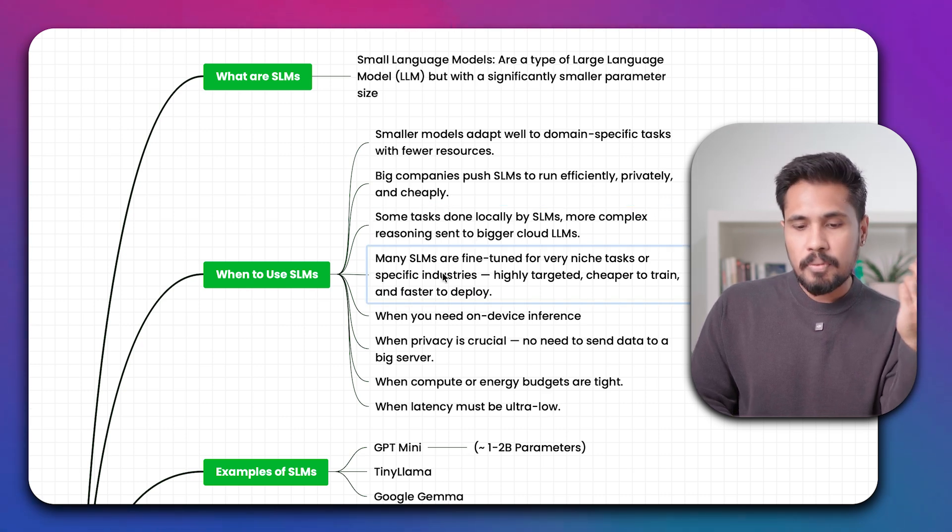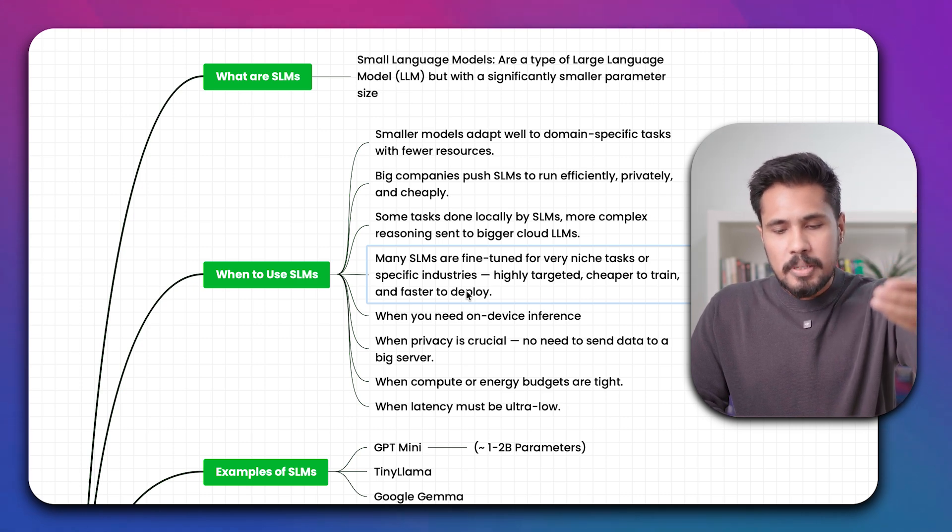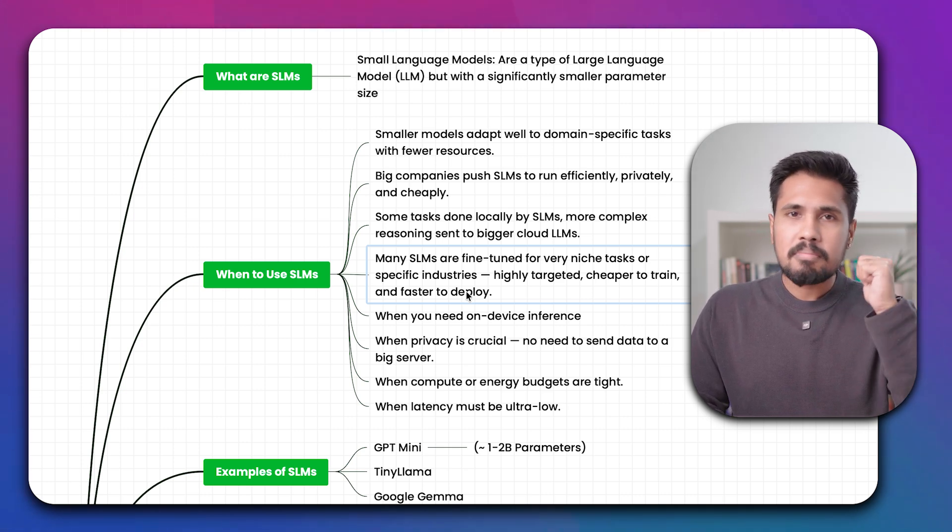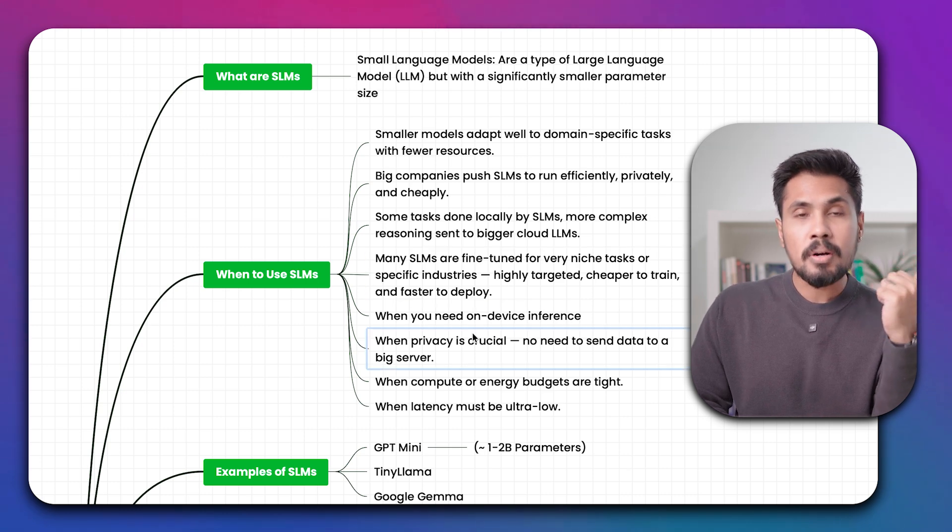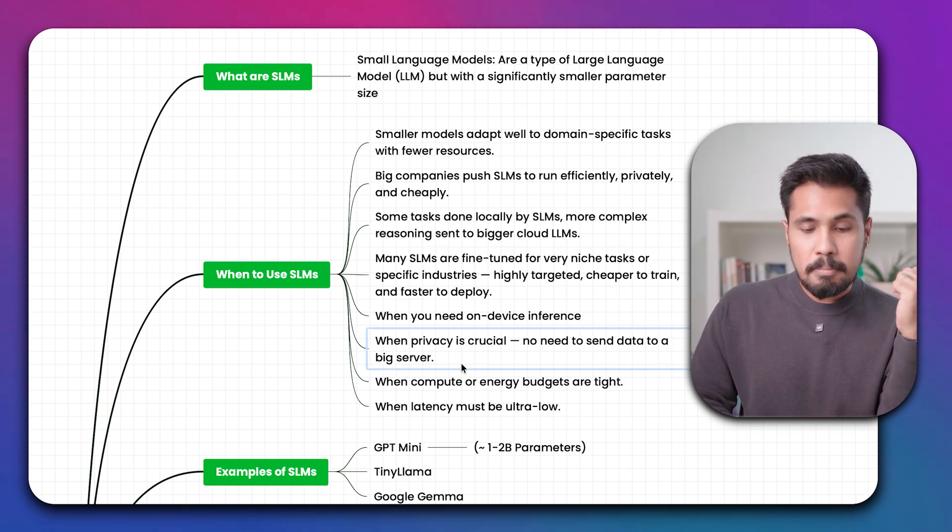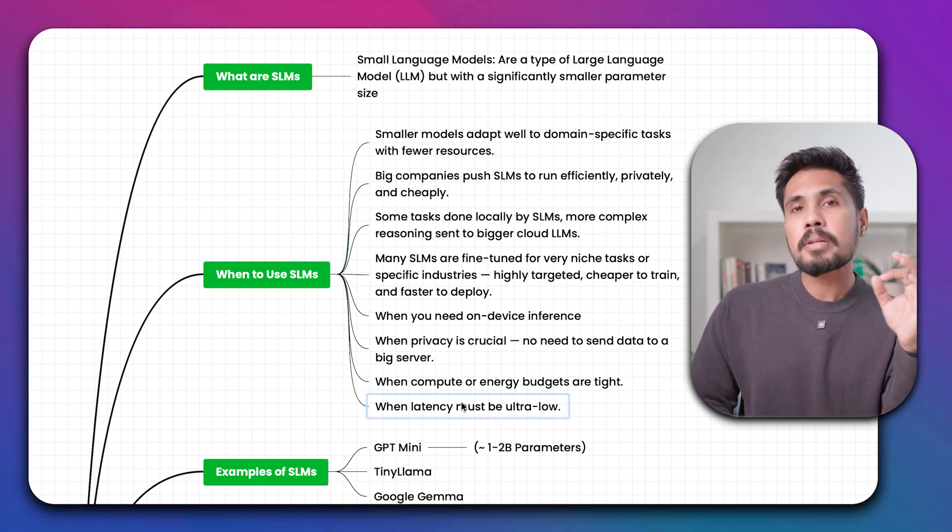Many SLMs are fine-tuned for very niche tasks. Same thing like domain-specific tasks. For targeted, cheaper, we are able to do it. When you need on-device, when privacy is crucial, and when you want to reduce the compute or energy, we need to go with SLMs.